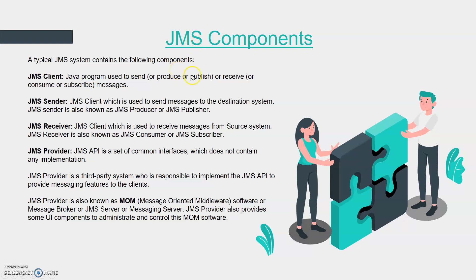Then we have the receiving side. A program in application B should be able to consume or subscribe to the message from application A. The terms receive, consume, and subscribe all refer to a Java program that is going to receive or read the message. So we have a sender — a Java program to send, produce, or publish — and a receiver that consumes or subscribes.